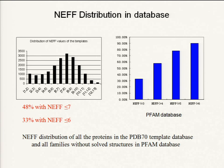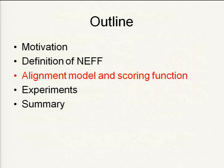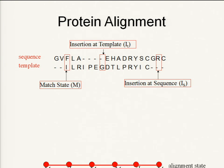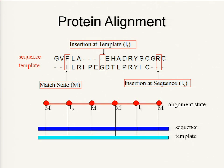We split the database into two parts. One database contains proteins with very low NEFF, in order to improve performance for this part. Now, for the alignment model, there is an alignment between the query sequence and the template. Here there are three different states: match, insert in query sequence, and insert in template. Our task is to predict the level of alignment states given the query sequence and template state.